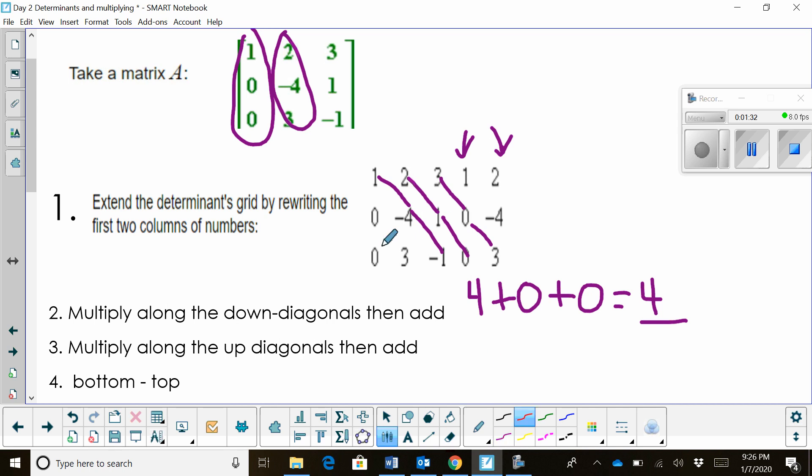Then what I'm going to do is multiply along what I call the up diagonals. So start in the bottom left corner and multiply up. 0 times negative 4 times 3, that's 0. 3 times 1 times 3, that's positive 3. And then negative 1 times 0 times 2, that is also 0. I'm going to add those together and I get a sum of 3.